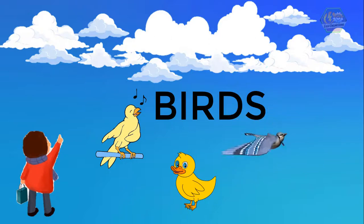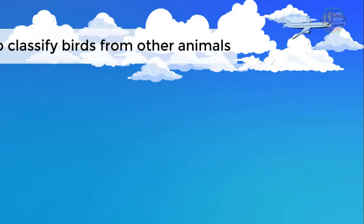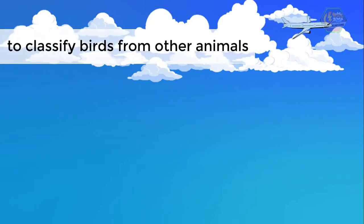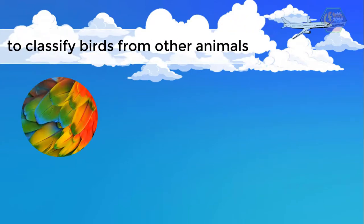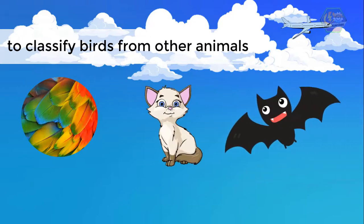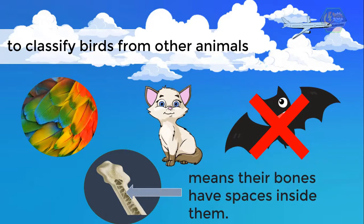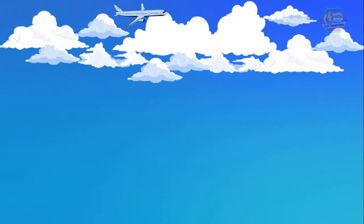The main thing to classify birds from other animals is their feathers. Other animals don't have feathers. Some might have wings, but if they don't have feathers, then they are definitely not birds. And to clarify, having wings doesn't make you a bird.